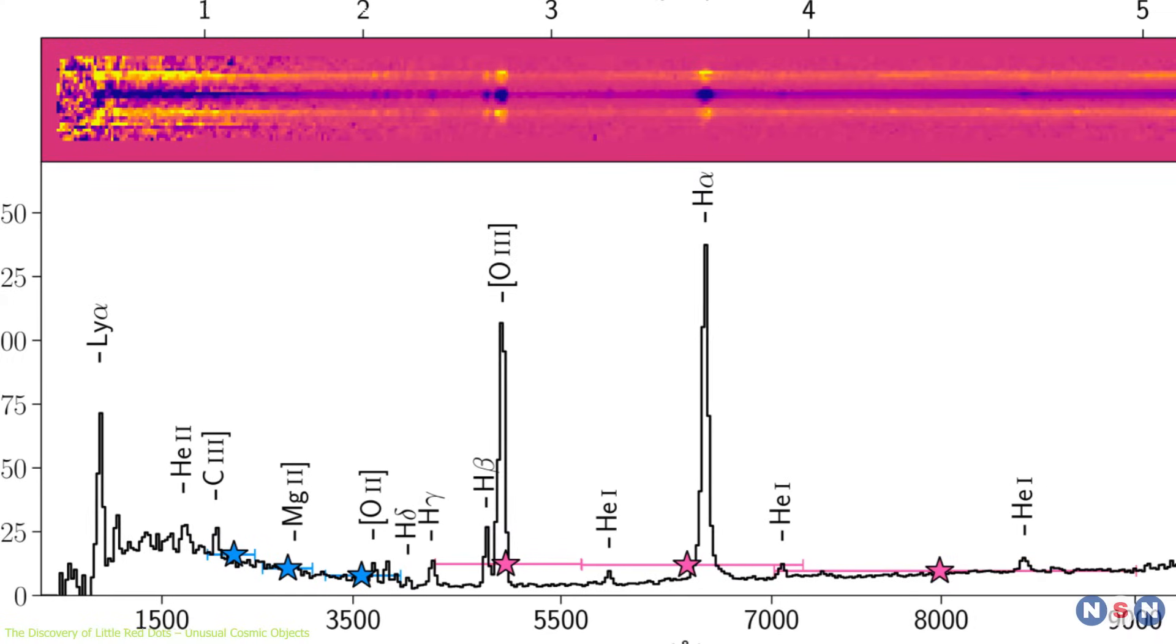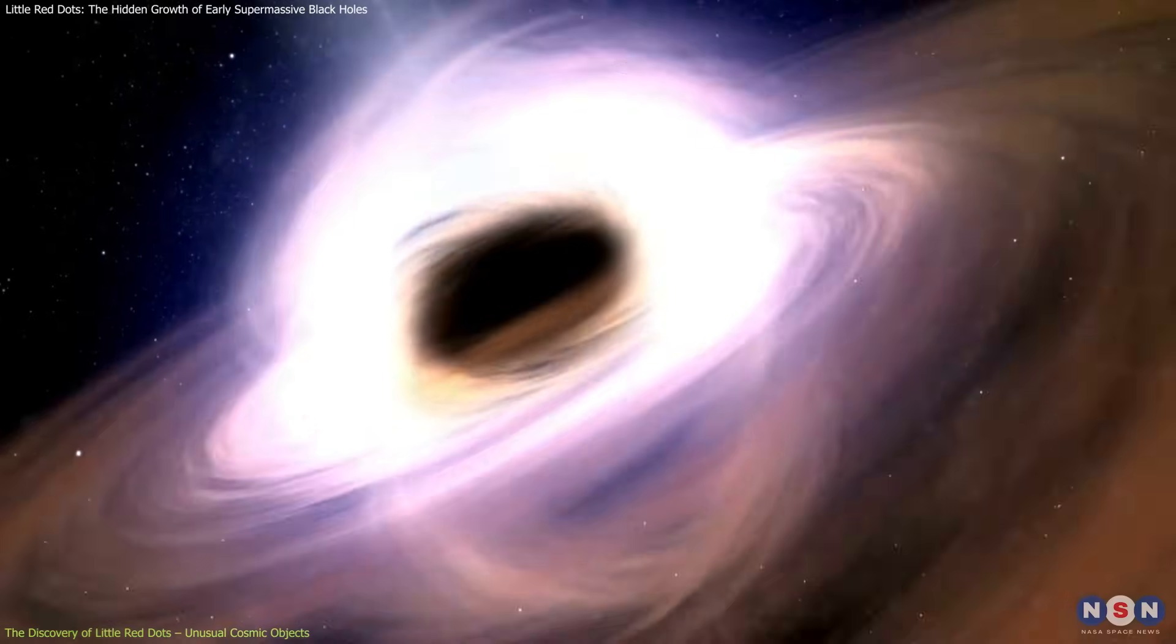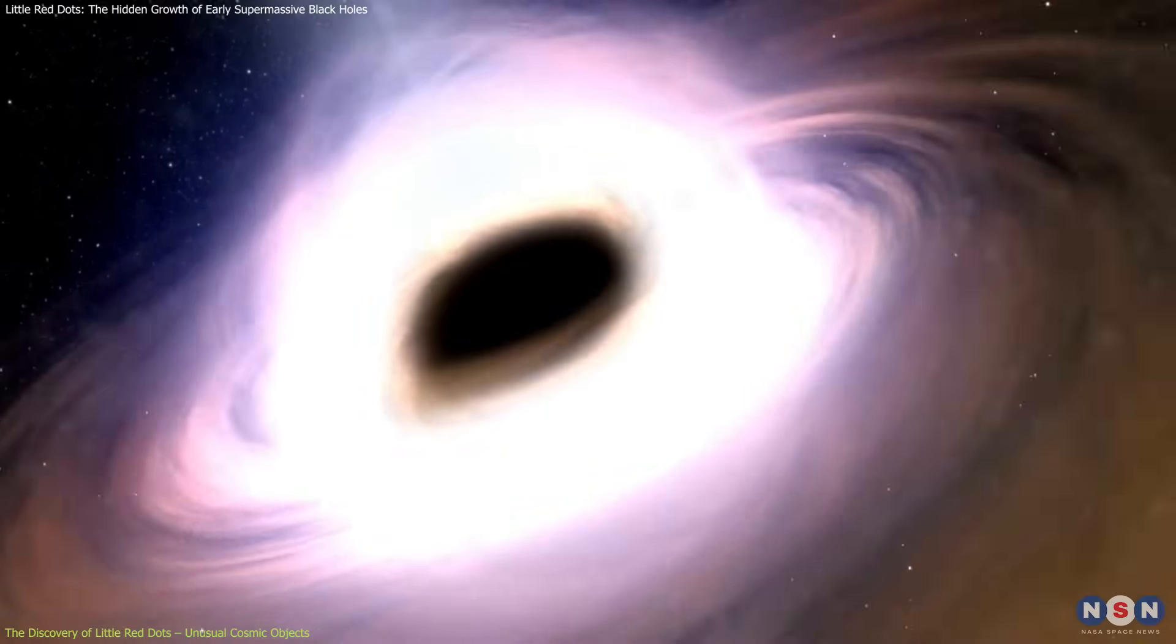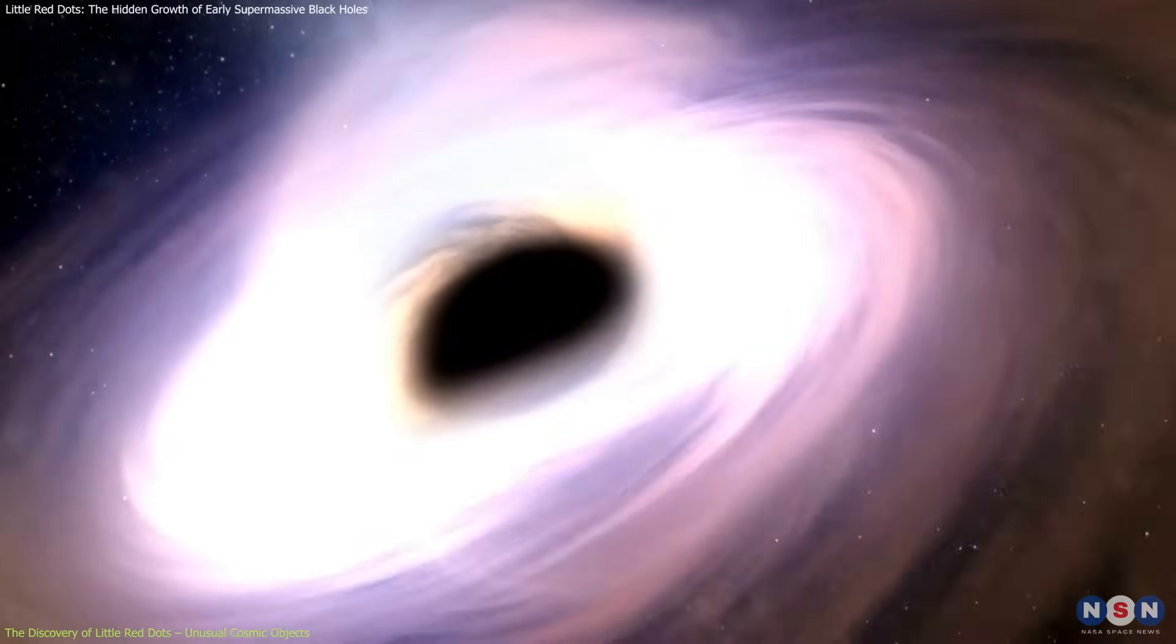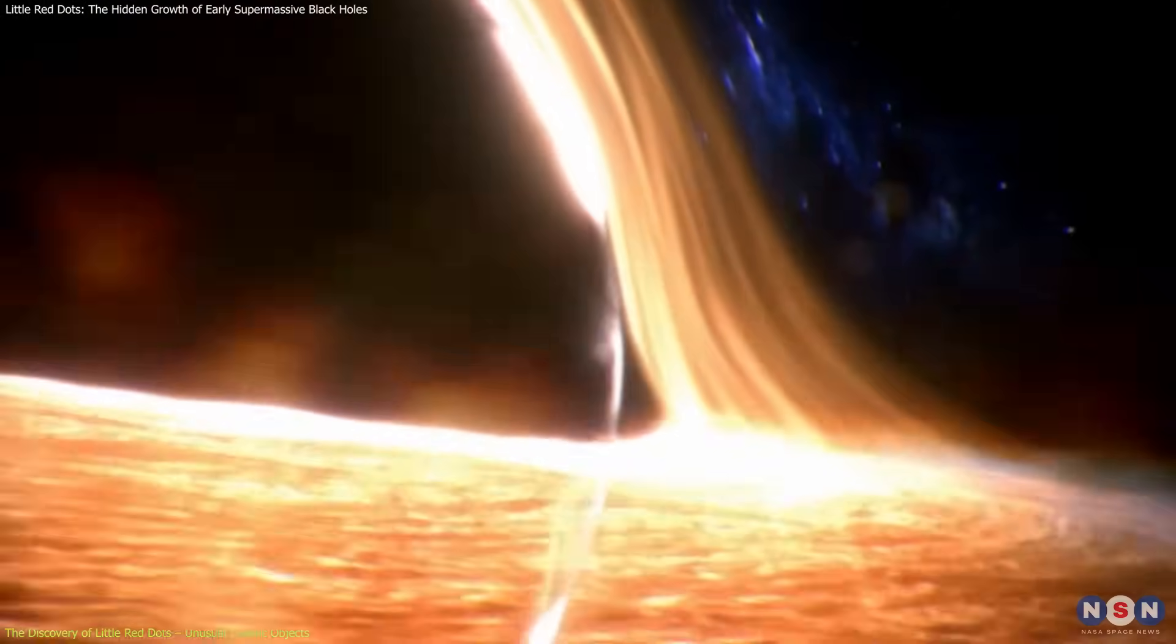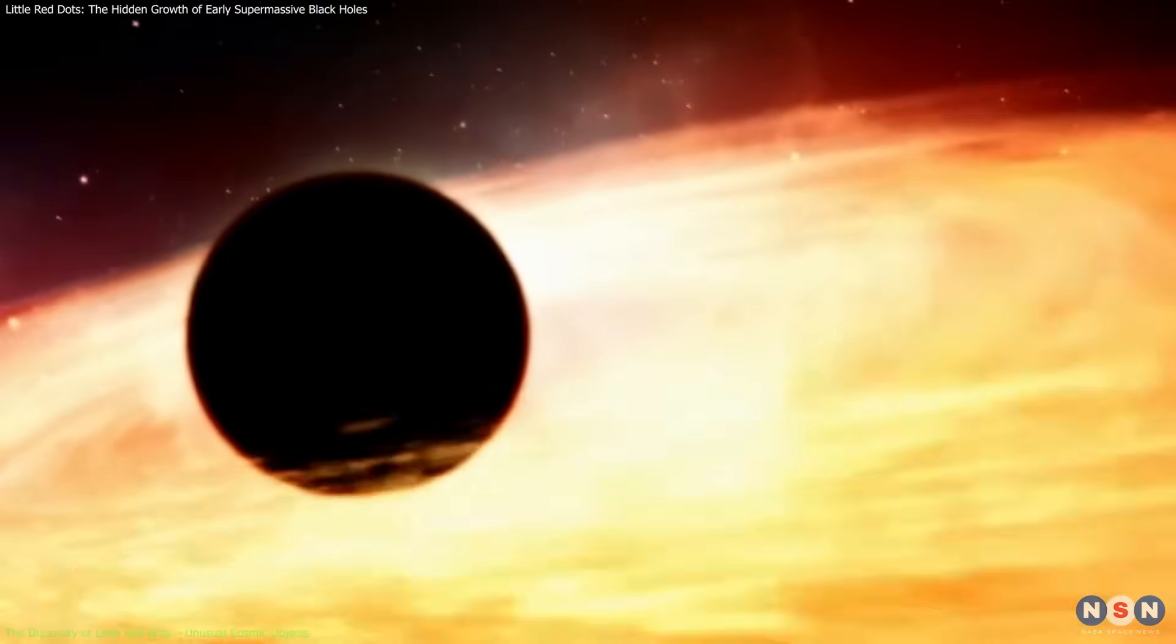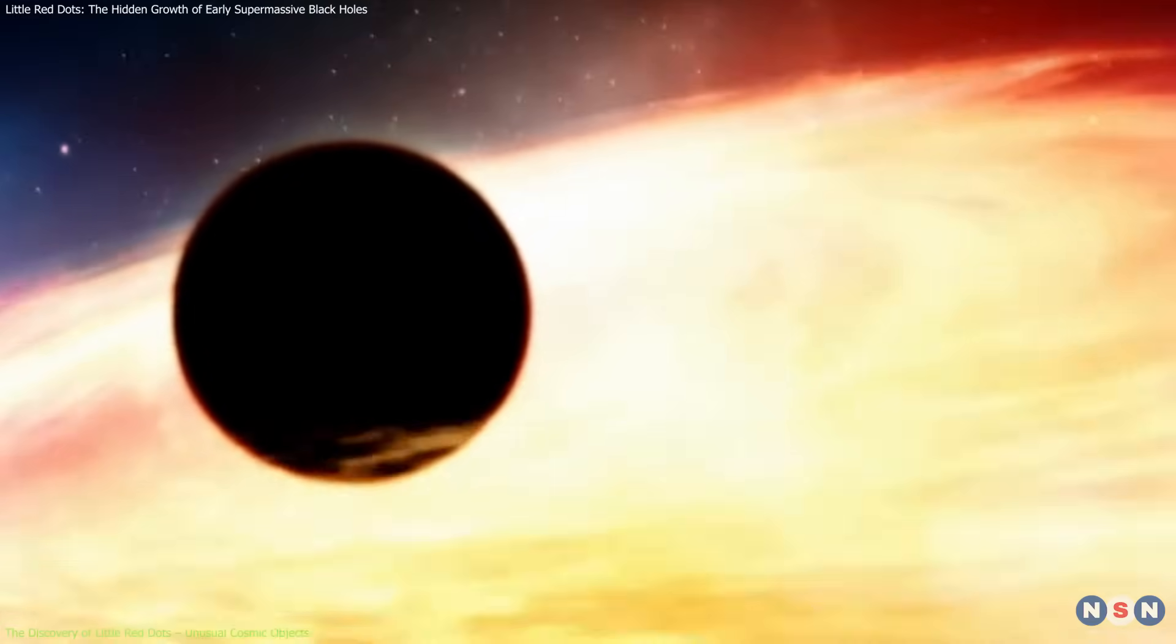One clue lies in their highly broadened spectral lines, which indicate gas moving at speeds exceeding 1,000 kilometers per second around a central region. This strongly suggests that these objects contain actively growing black holes, but unlike typical AGNs, they behave differently.